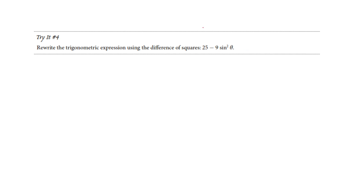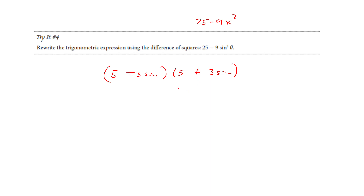Once again, if this looks weird, just change it to something you know. It has perfect squares on the front and the back, so we factor it: write the square root of the front, the square root of the back, write that twice, and since there's no middle term, they get opposite signs. All the normal algebra rules apply — if you're not comfortable doing it with a sine function, do it with x, and when you're done substitute the trig function back in.